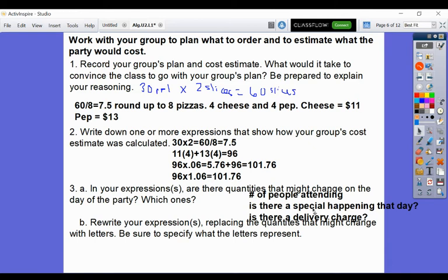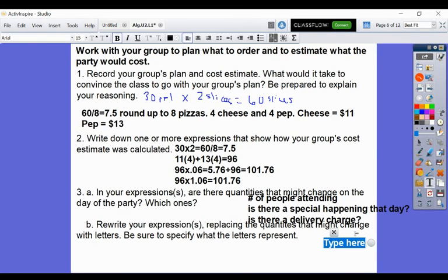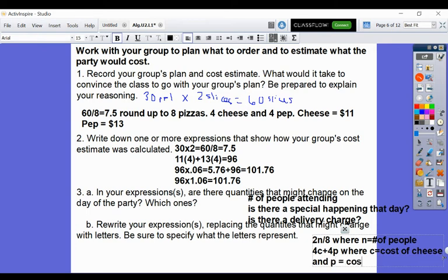So we can rewrite our expressions, but now using variables on things that might change. So the first thing that will change is the number of people. So I might put 2N, because each person still gets pizza, right? 2N divided by 8, where N equals number of people. And then we could do something like 4C plus 4P, where C equals cost of cheese, and P equals cost of pepperoni, in case there was a sale going on. Excellent.